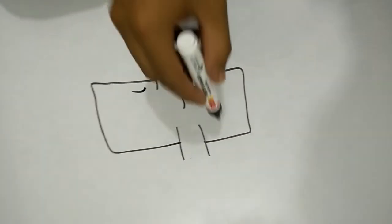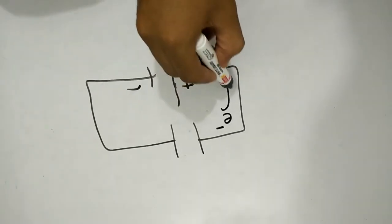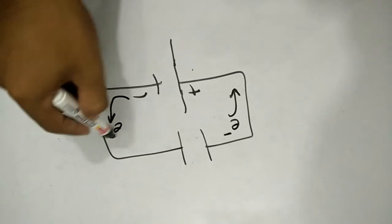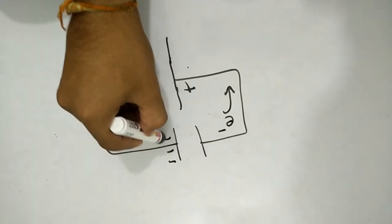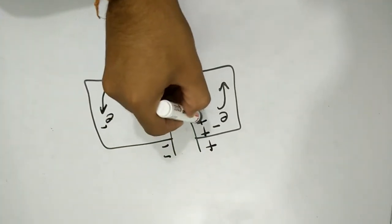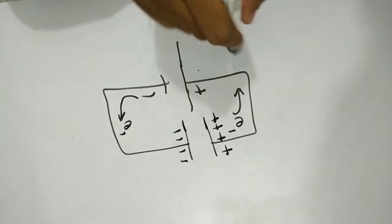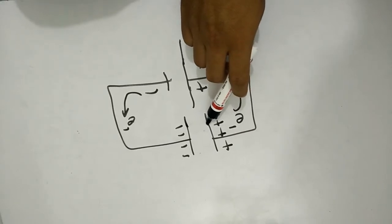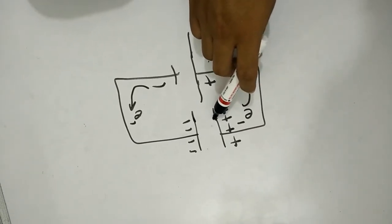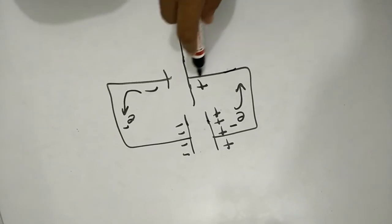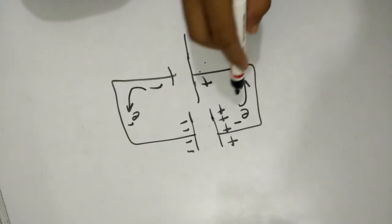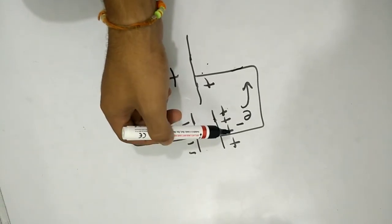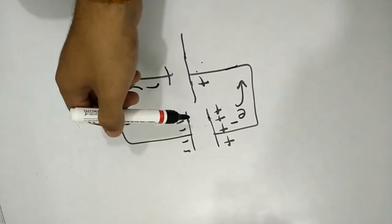So electrons will flow like this. Negative will repel electrons towards the another metal plate. If the electrons on this plate are over, that means there are no more electrons to attract over the positive element of the battery. So electrons will be not there on this plate, so no current will flow after some time, that is after fully charging the capacitor.